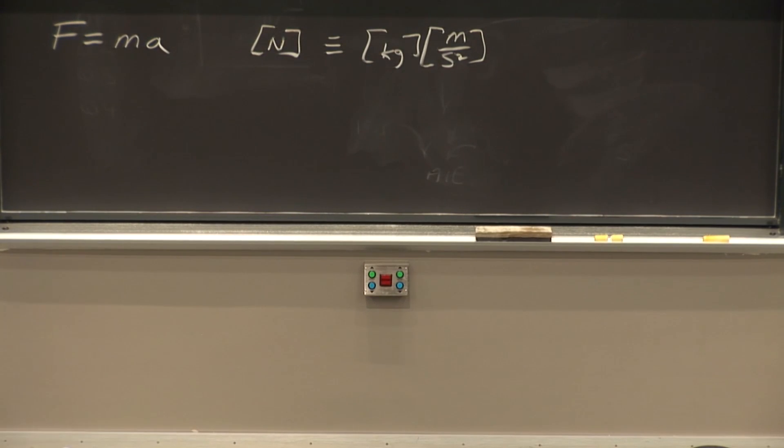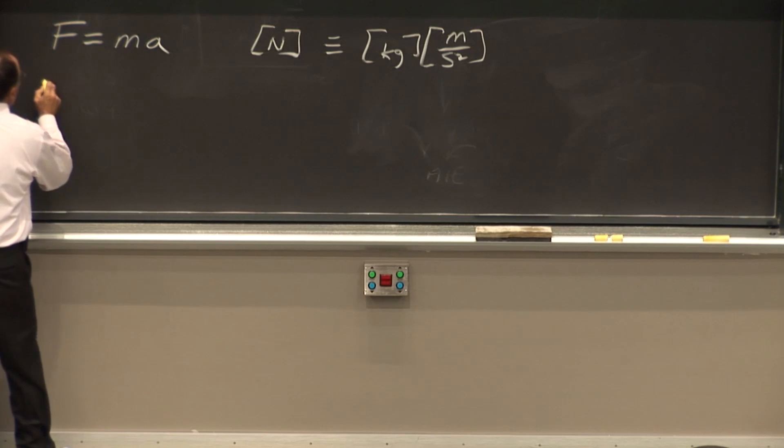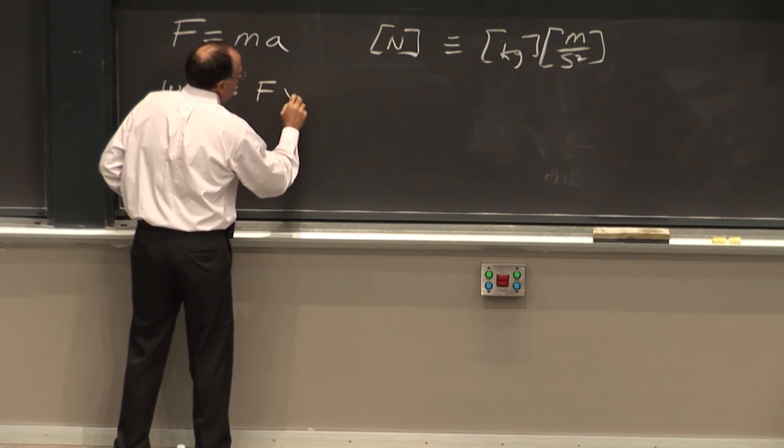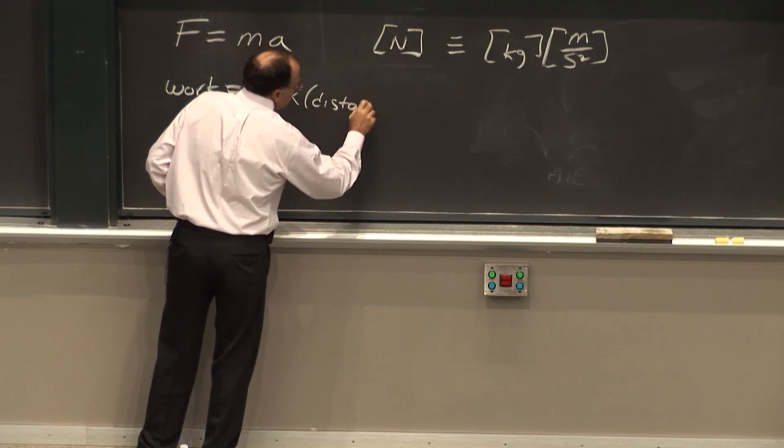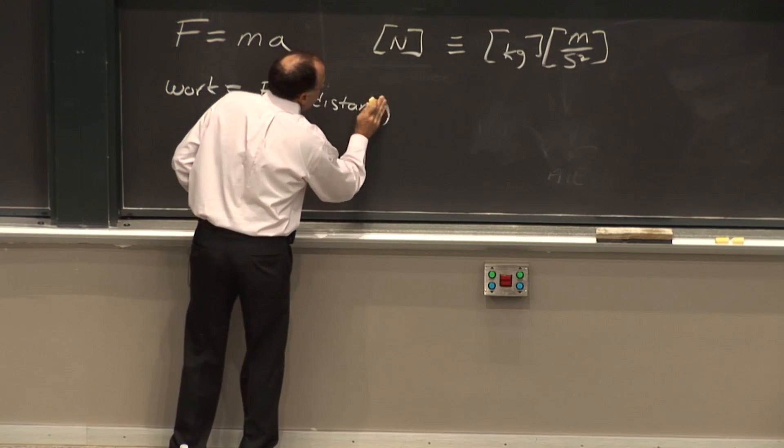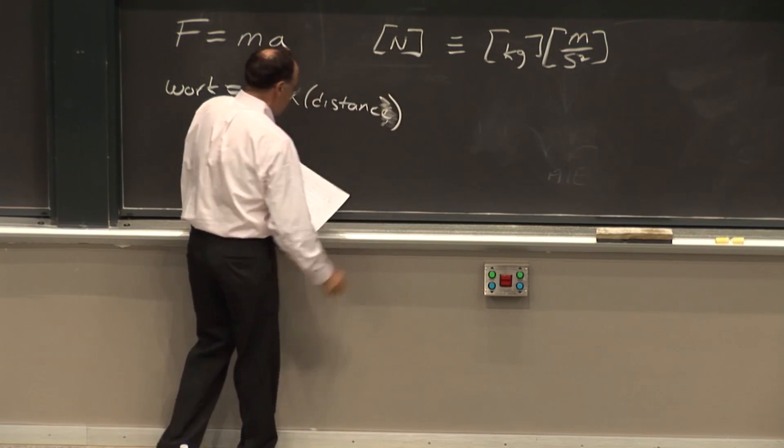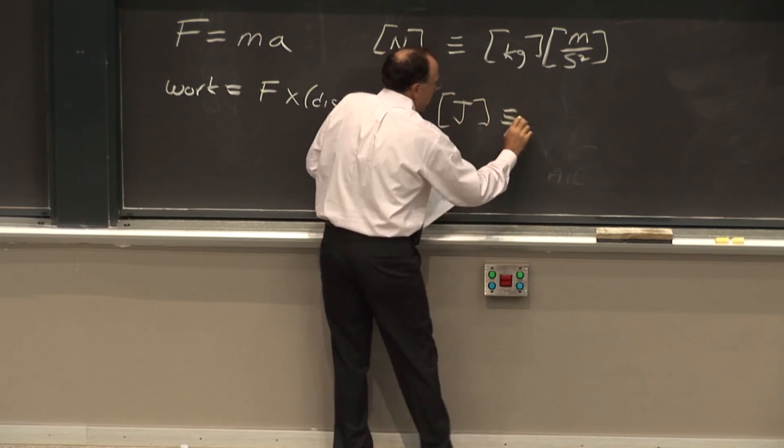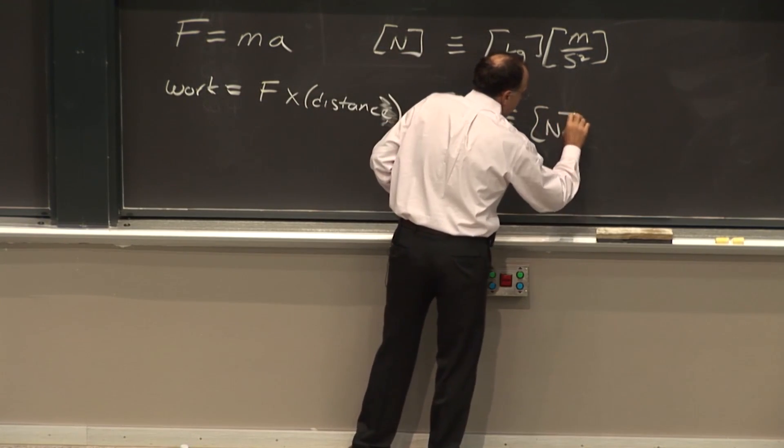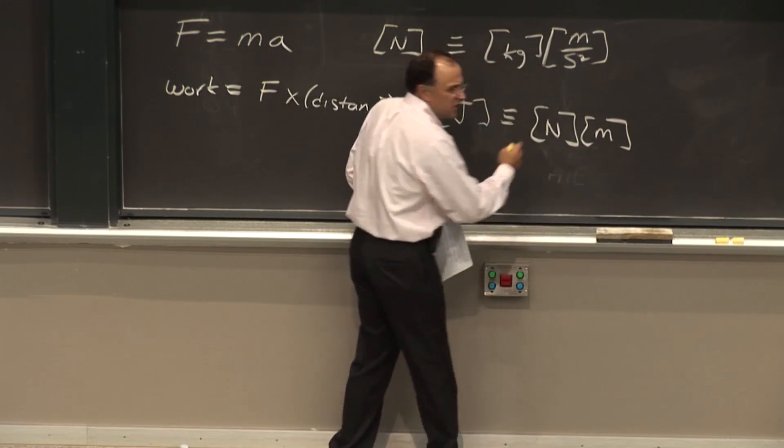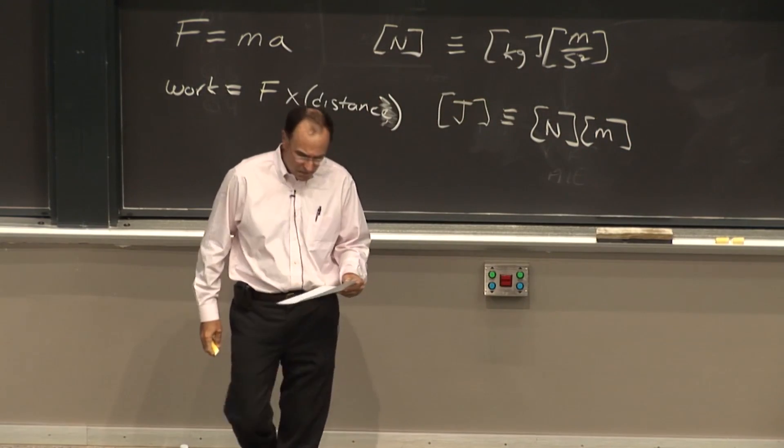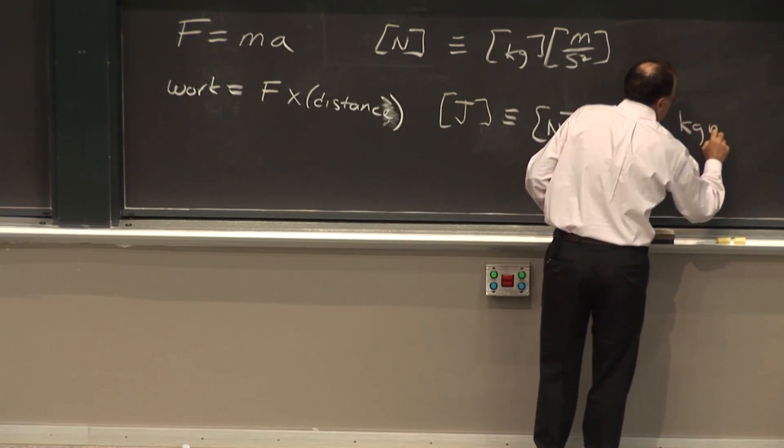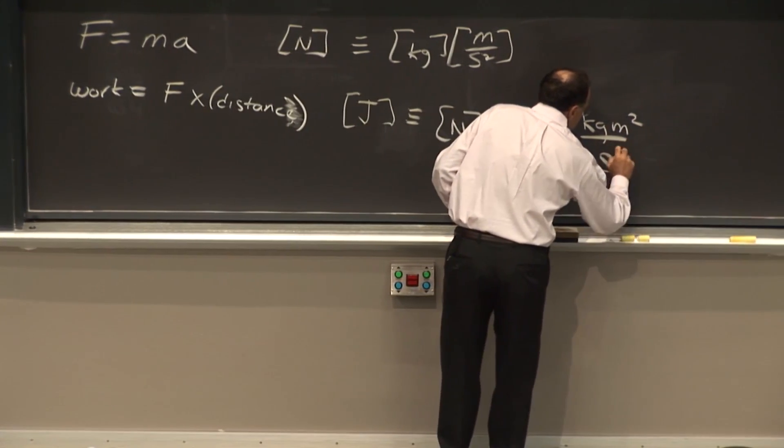And Newton also worked out that work is just force applied over a distance. Work energy. And so joules is just obviously a Newton times a meter. See I put these square brackets to mean units. Or if you multiply all that through, you get a kilogram meter squared per second per second.